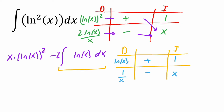Now we do the same thing: take this piece times this. This step is special, but the reason we can handle it now without the earlier issue is that x times 1/x is just 1 — so we'll have the integral of 1. I take this piece, multiply by positive x.